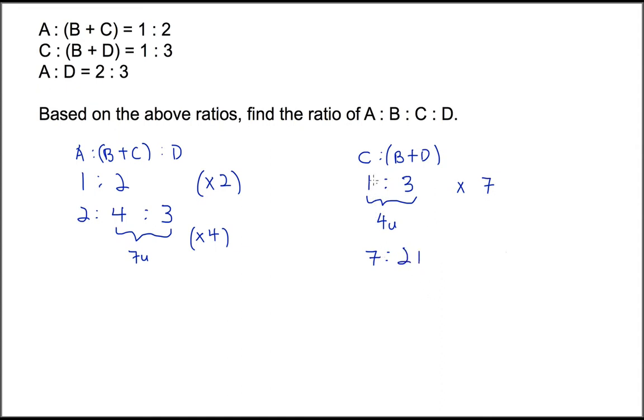Essentially they are still the same. C is to B plus D is still 7 is to 21. It's still 1 is to 3. Now for here we need to times 4. A also need to times 4. 2 times 4 we will have 8. 4 times 4 is 16. 3 times 4 is 12.